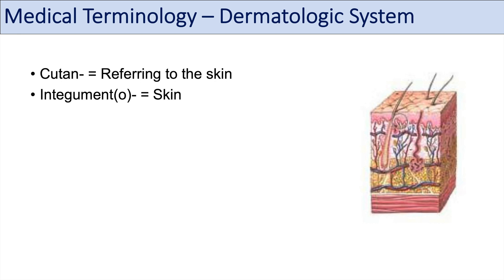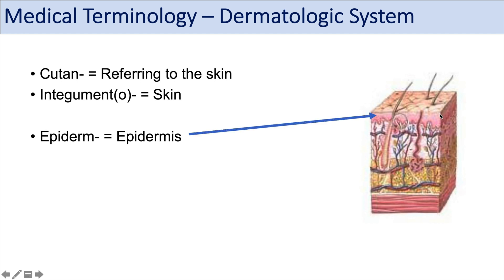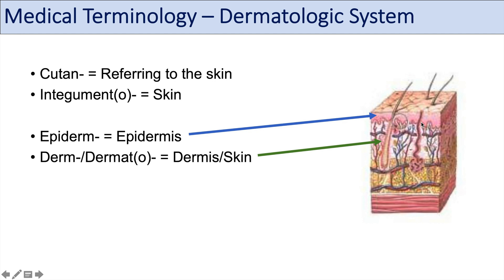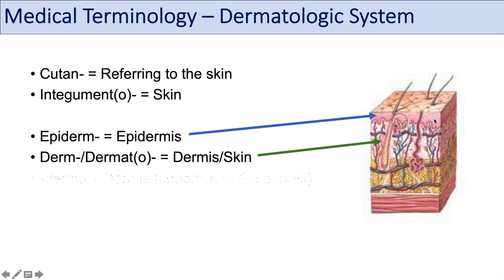We're going to look at different medical terms that describe the different layers of skin from most superficial down into deeper areas. The first prefix is epiderm, which refers to the epidermis — the top layer of the skin. You can think of words like epidermal, like an epidermal cyst. The second is derm or dermato, which refers to the skin but also to the dermis, the second layer of the skin. There's also a related suffix, derma, which refers to a condition of the dermis, such as pyoderma.